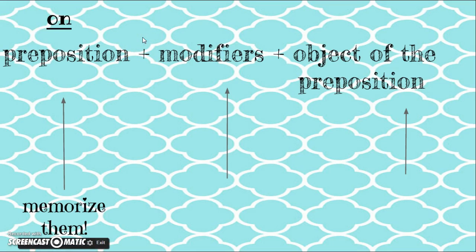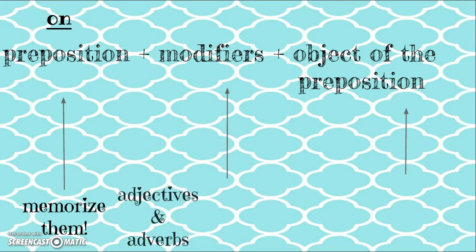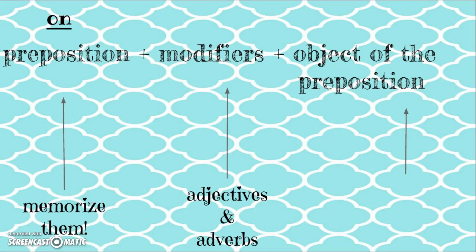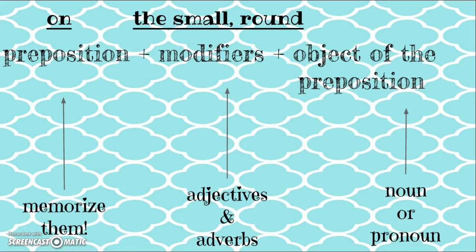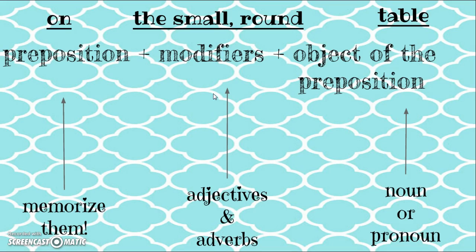We talked about modifiers as we reviewed the eight parts of speech. Modifiers are adjectives and adverbs — they're used to describe things. So I have the preposition 'on,' and I've got some modifiers: 'the' is an article adjective, and 'small' and 'round' are describing words. The object of a preposition is a fancy name for a noun or pronoun that comes at the end of a phrase — 'table' in 'on the small round table.' We can have as many modifiers in the middle as we want. The goal of a prepositional phrase is always to add description to your writing.